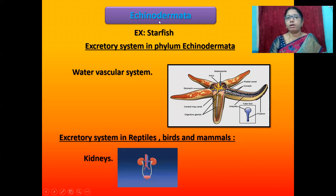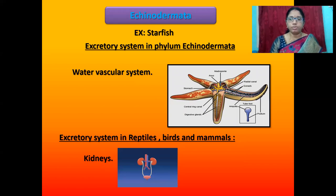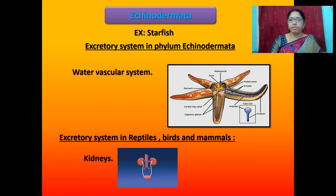The next phylum is Echinodermata. The example organism is starfish. 'Echino' means spine and 'derma' means skin. The excretory system in Echinodermata uses the water vascular system — tube-like structures through which water enters and exits the animal. The next group is reptiles, birds and mammals. Their excretory organs are kidneys, which we have already discussed in the previous class.